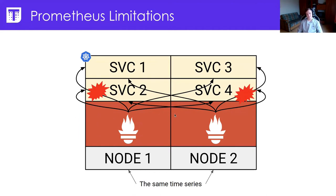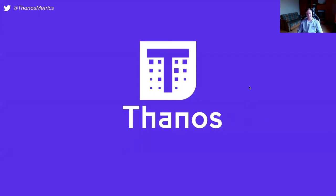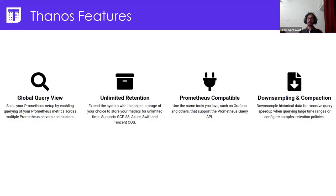That's where Thanos comes in. Thanos allows you to have a global query view over your data, so you can run a single query that touches all of your infrastructure metrics. We can have unlimited retention with the help of object storage. Thanos exposes a Prometheus-compatible API, so you can use those endpoints anywhere a Prometheus query is supported. Thanos also has support for downsampling and compacting your metric data.